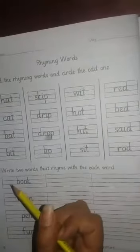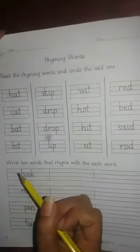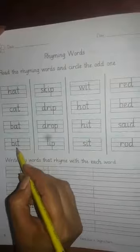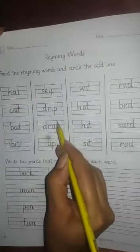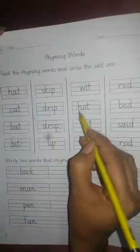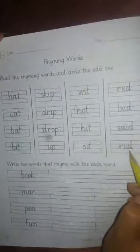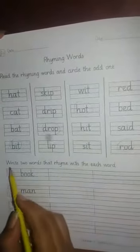So students, here we circle the odd one. So bit, drop, hot, and road. Now write two words that rhymed with each word.